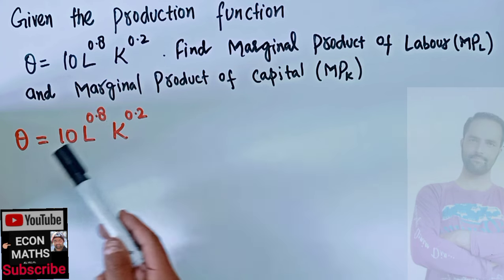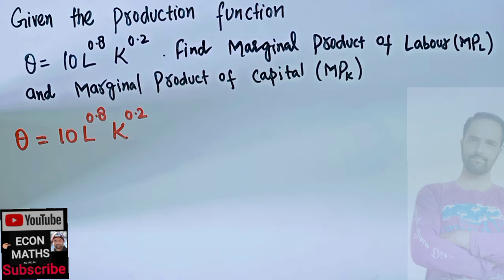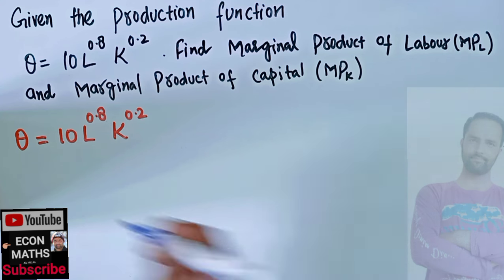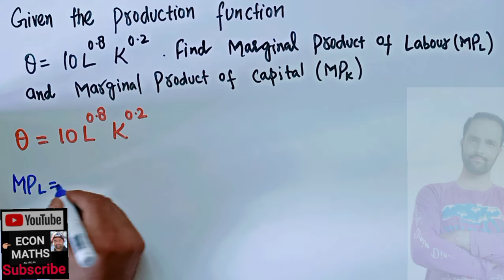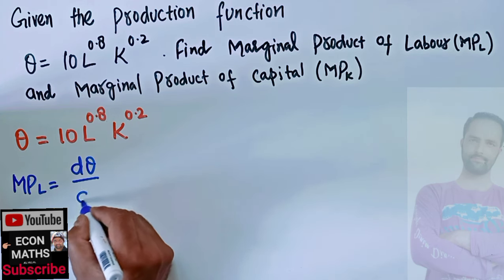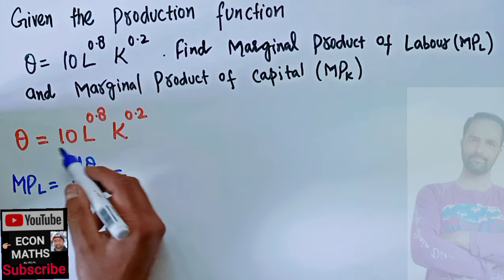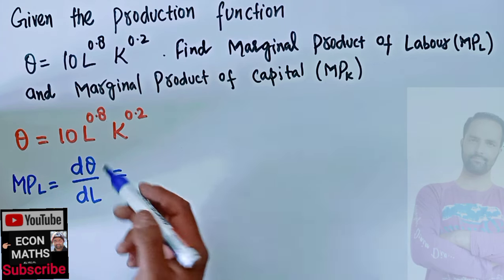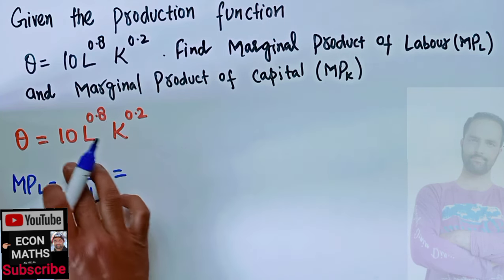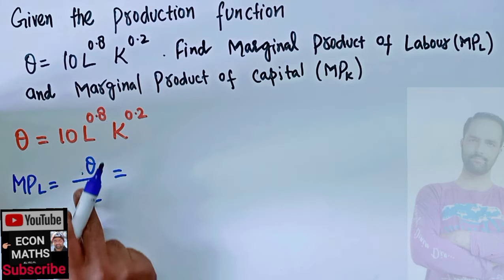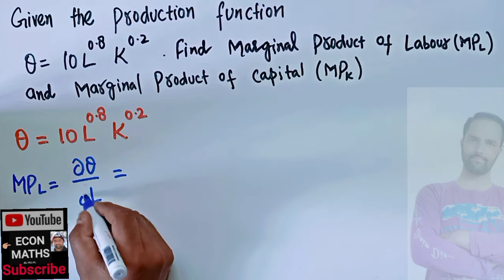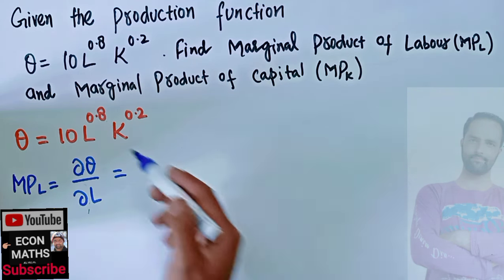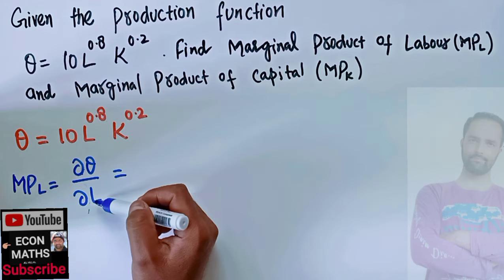Production is a function of labor and capital. To find the marginal product of labor, we take the partial derivative of the production function with respect to L. So marginal product of labor is simply the partial derivative of the production function with respect to labor.